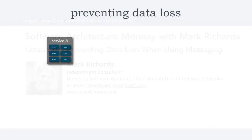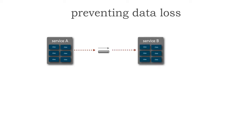Let's take a look at a scenario. Let's say we have service A, and service A sends a message out to service B. Service B then ends up receiving that message and inserts or updates a record in the database. There's a lot of room for data loss when using asynchronous messaging.